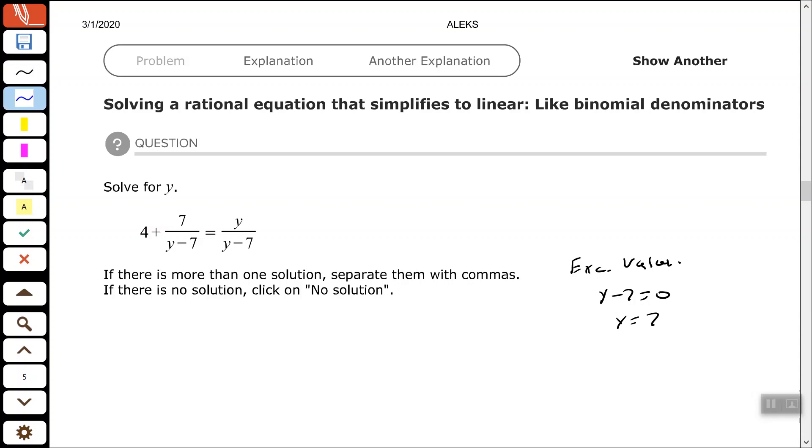All right, so the only denominator we have is y minus 7. That's the only factor we have. So I'm going to multiply both sides by y minus 7 to clear my fractions.